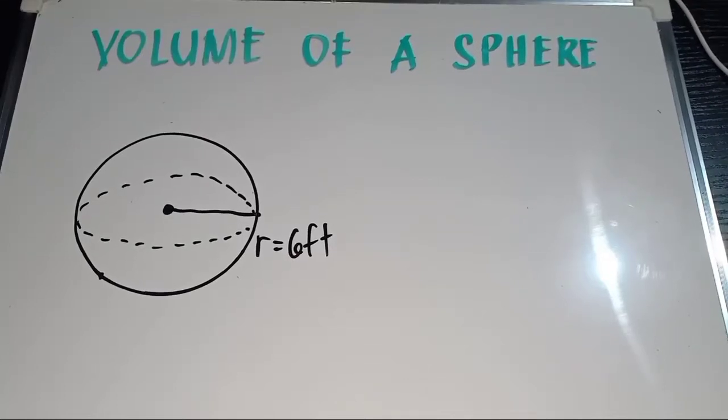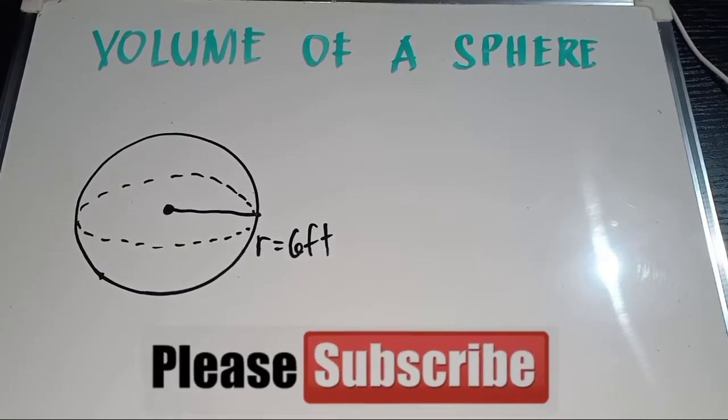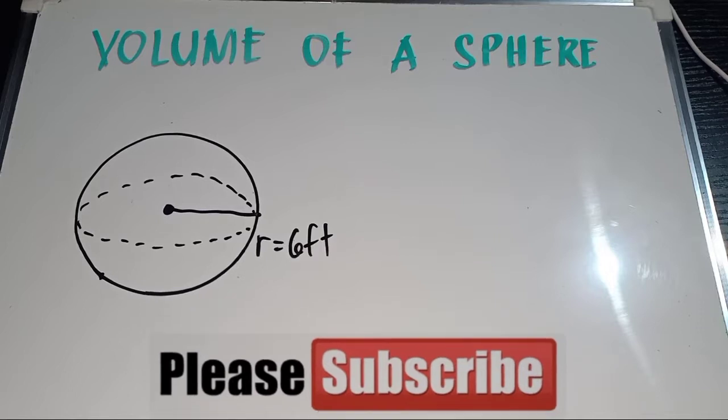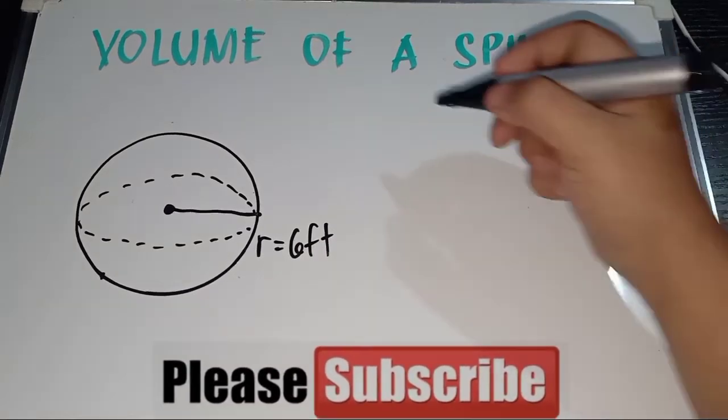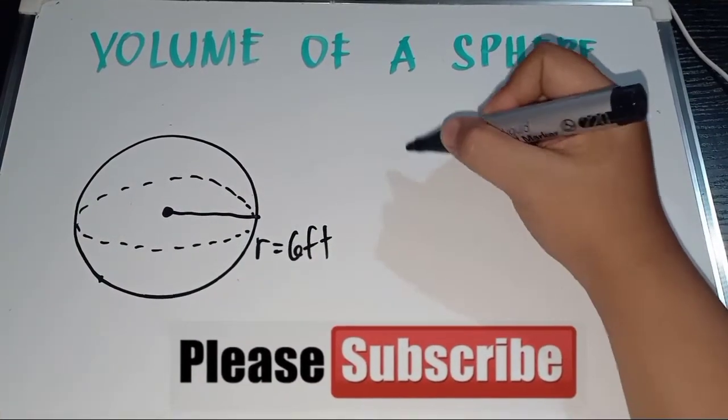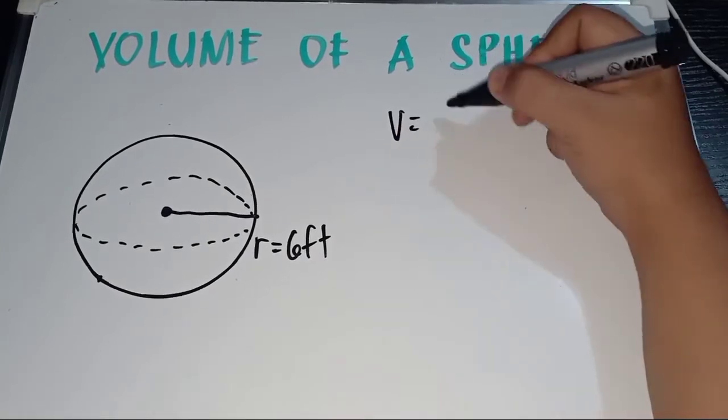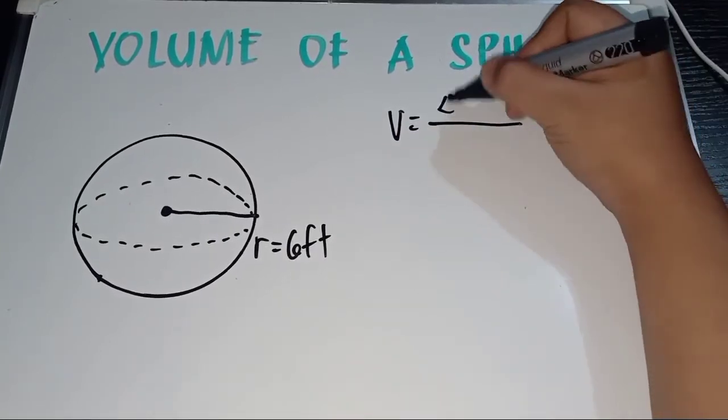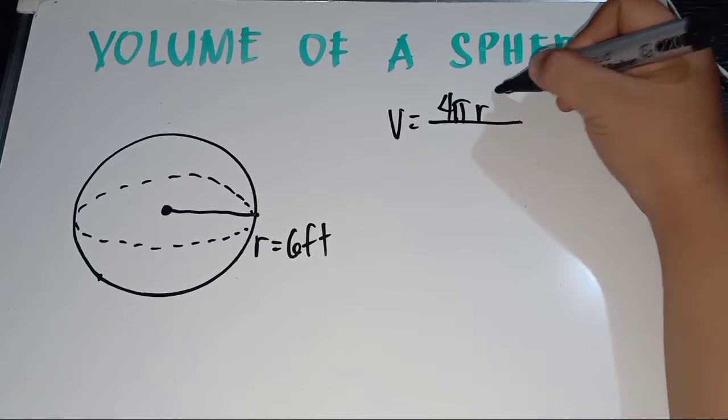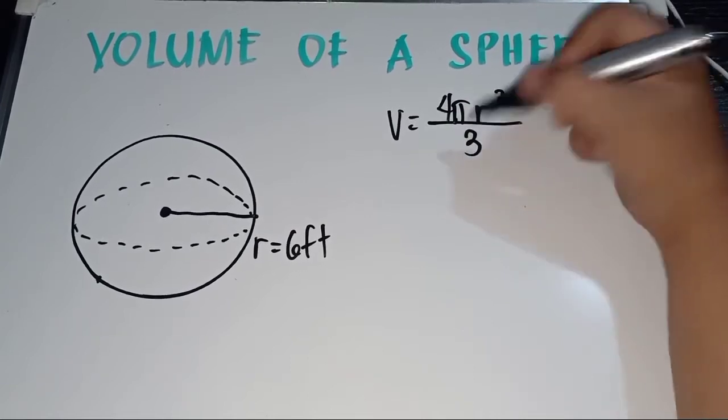How do we solve for the volume of a sphere? So, in getting the volume of the sphere, we use the formula 4 pi r cubed over 3.